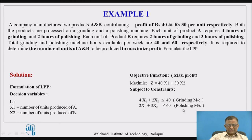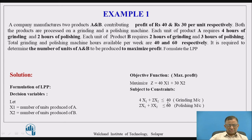Similarly, the second constraint is the polishing machine, with maximum availability of 60 hours, so we can use less than or equal to 60. The linear equation is 2X1 + 3X2 ≤ 60, where 2 hours per unit for product A gives 2X1, and 3 hours per unit for product B gives 3X2. This is how the constraint equation for the polishing machine is developed. Two constraints are imposed on the decision variables, and satisfying both allows us to determine the values of X1 and X2 and calculate the maximum profit.